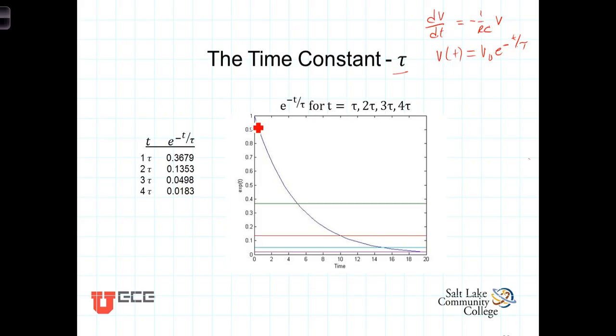So what I have here is I have plotted V0 e to the minus t over tau, where V0 equals 1. So along this axis here, that's the time axis, along this axis here is V of t.